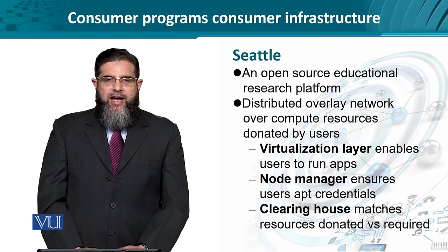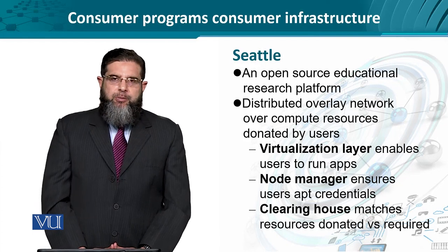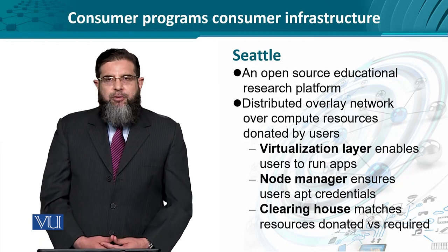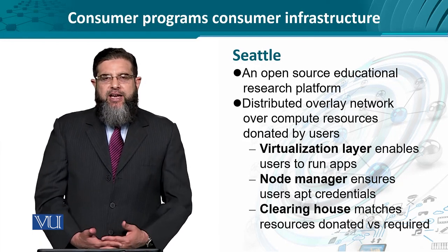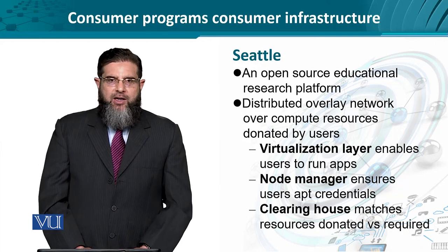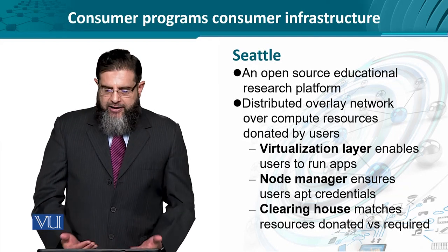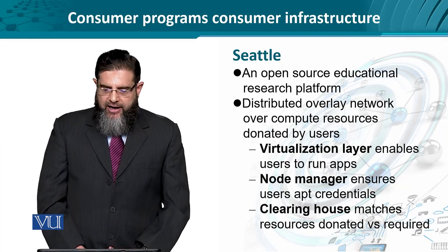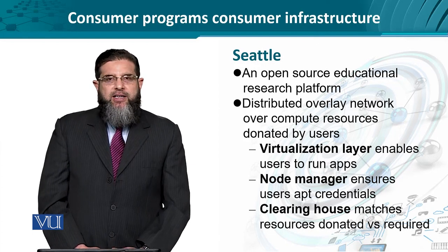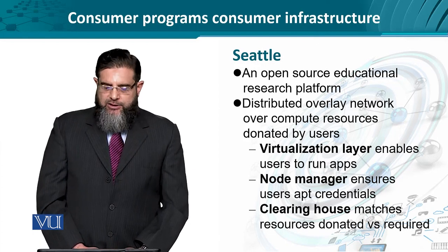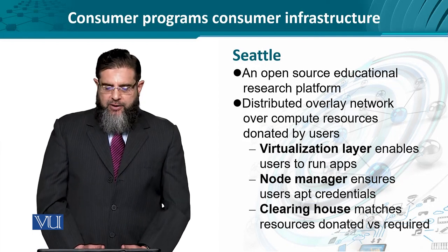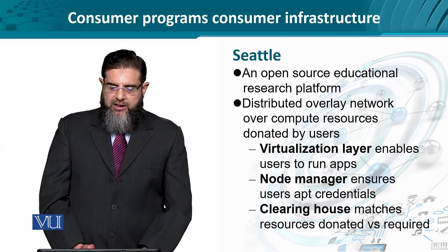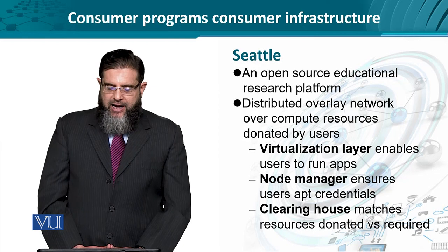Seattle, as an example from the research paper I'm referring to, is an open source educational research platform. It comprises multiple entities to realize an end-to-end system where we have a consumer talking to another consumer through an intermediary. This requires a highly distributed overlay comprising resources provided by contributing consumers and a hierarchy of functional elements, such as an overlay virtualization layer.